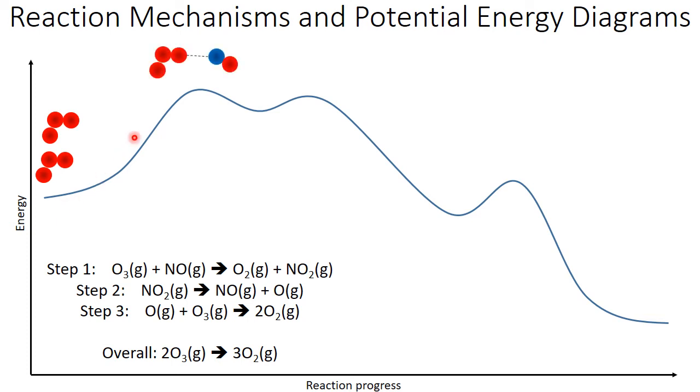First, one molecule of ozone will interact with our NO, forming our first activated complex. You can see here a dashed line representing the bond that is forming between the oxygen and the nitrogen. Those will then react, forming a molecule of oxygen and a molecule of NO2.